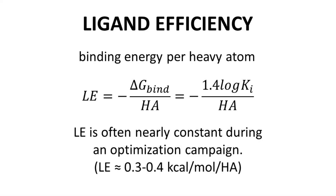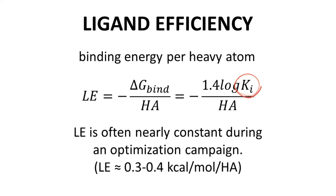Ligand efficiency is essentially the binding energy per heavy atom in the molecule. It can be calculated as the binding energy divided by the heavy atom count. Heavy atoms include all non-hydrogen atoms in the molecule. You can also use KI or KD to calculate LE, though very often people will use IC50 or EC50 in the calculation.